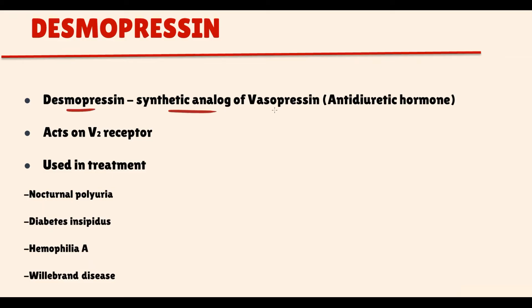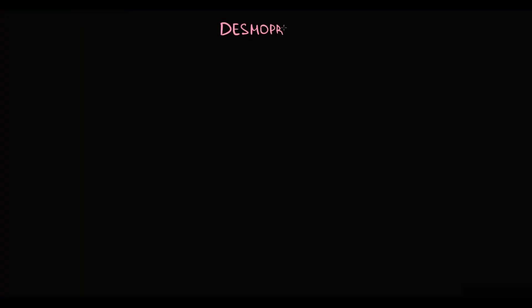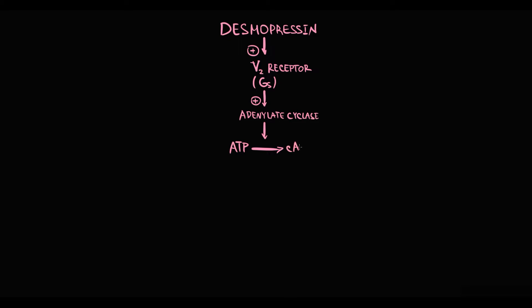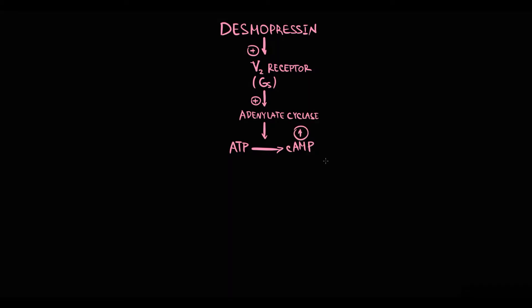Desmopressin is a synthetic analog of vasopressin that acts on the V2 receptor and is used in treatment of a variety of medical conditions. Desmopressin acts on the vasopressin V2 receptor, which is a Gs protein-coupled receptor. This means that with activation it stimulates adenylate cyclase, which in response converts ATP into cyclic AMP. Activation of V2 receptor causes increasing intracellular cyclic AMP levels, and from this point everything depends on the site of action.